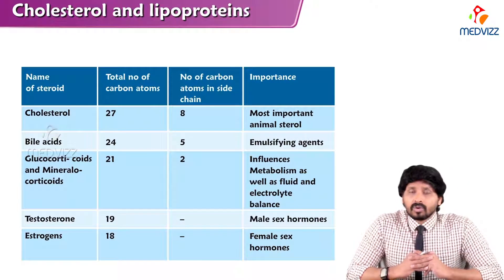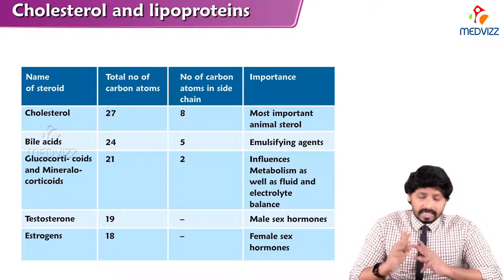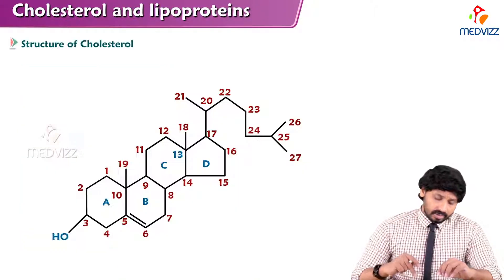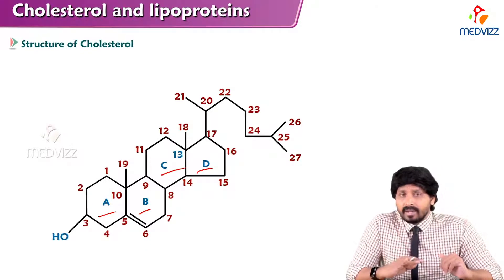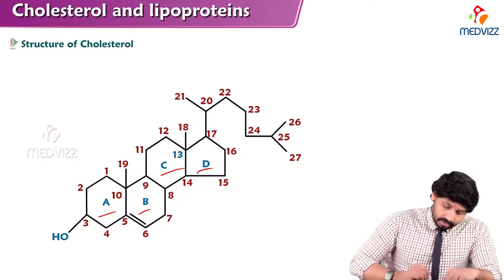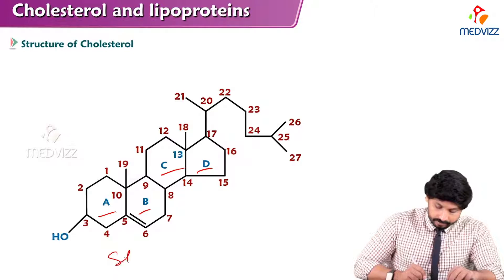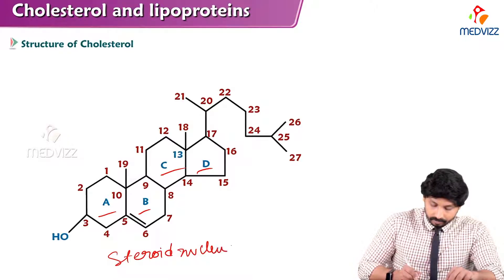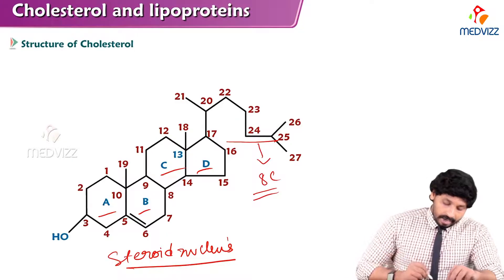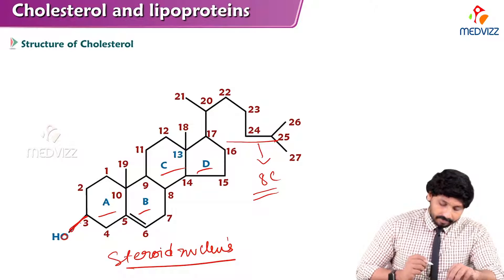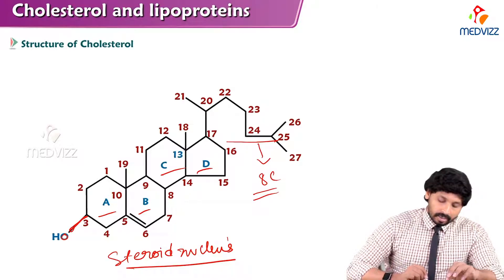Cholesterol is a 27-carbon compound and its ring system is known as cyclopentanoperhydrophenanthrene. It has four rings in the structure: A, B, C, and D — these four rings together are known as the steroid nucleus. An eight-carbon hydrocarbon side chain is attached to it. There is a hydroxyl group attached to the A ring at the third carbon (C3), and there is a double bond in the B ring between C5 and C6.